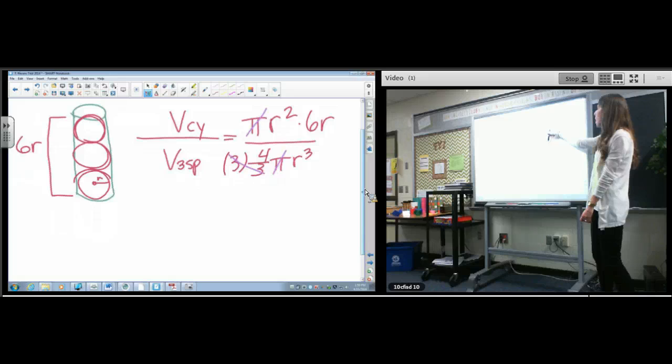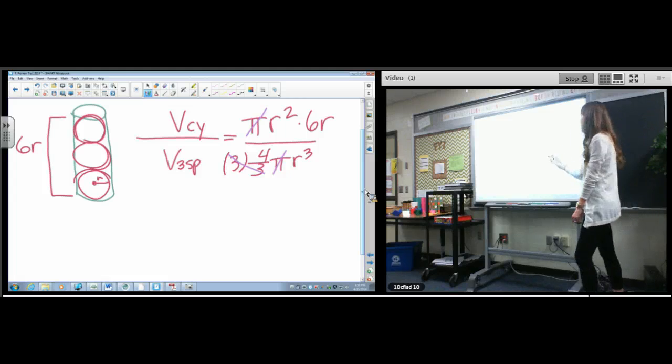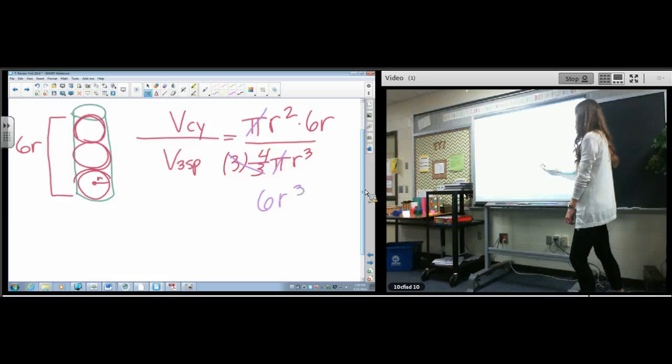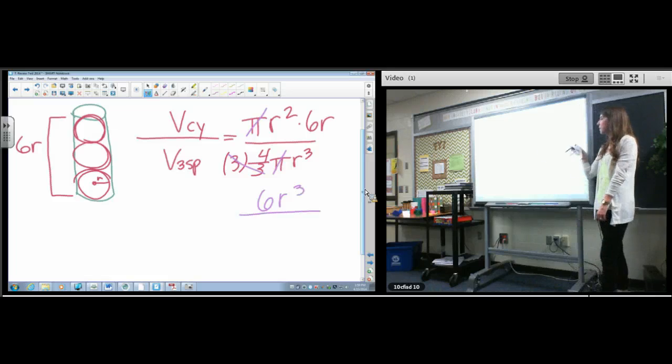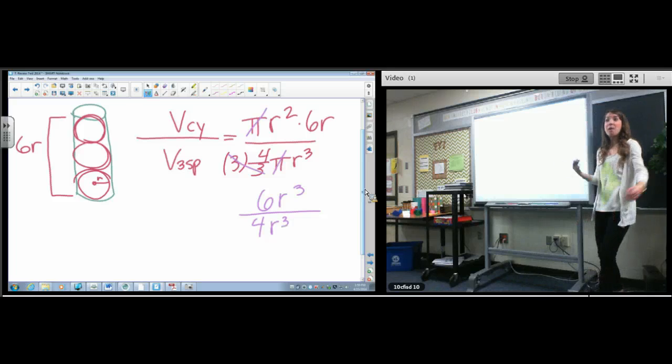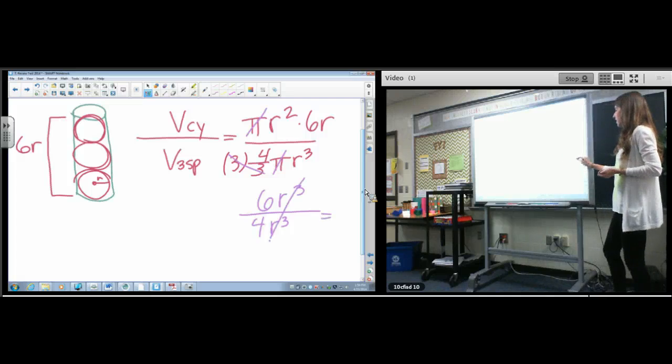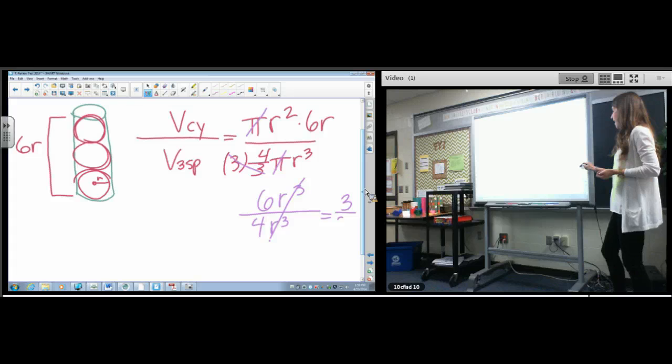So let's rewrite the numerator. Ready? What's R squared times R? What's like saying R times R times R? R cubed. That's R cubed. Are we okay with that? There's two of them here, there's one of them here, 2 plus 1 is 3. So it's 6R cubed over what's left down here? 4R cubed. What happens to the R's? Oh my God.